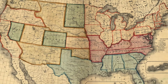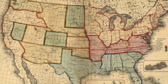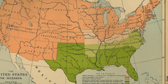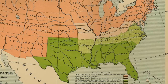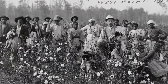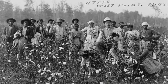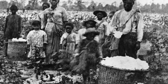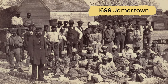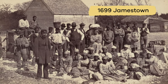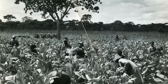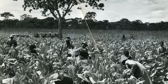In 1861, there were 34 United States of America. 11 of these states acted to secede or withdraw from the Union and form the Confederate States of America. At the heart of the issue was slavery. Slavery was not unique to the U.S., but became active in America in 1699, beginning in the colony of Jamestown, when African laborers were brought to work in the tobacco fields.